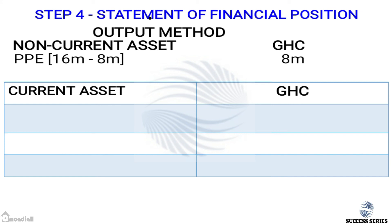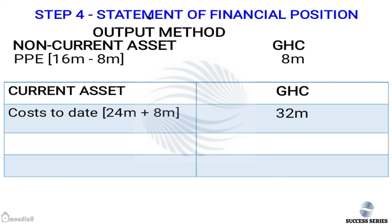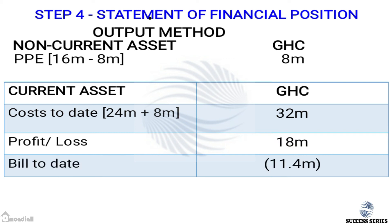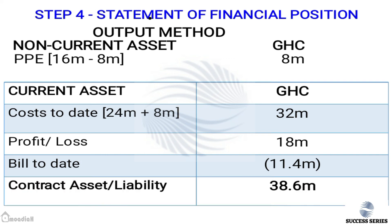Contract asset using the output method: cost to date = 24 million plus 8 million depreciation = 32 million, plus profit of 18 million, minus billings to date of 11.4 million. This gives a contract asset of 38.6 million. Thank you.